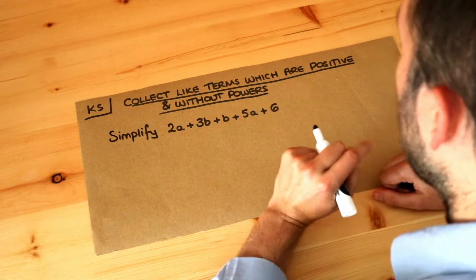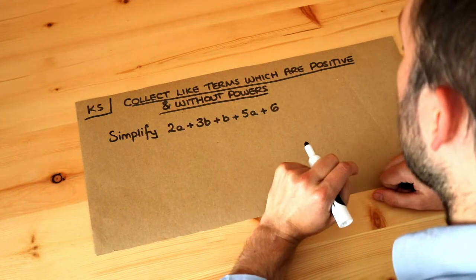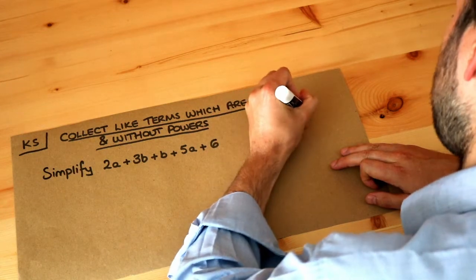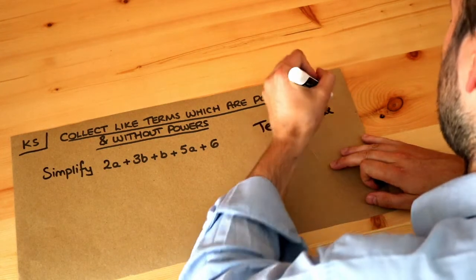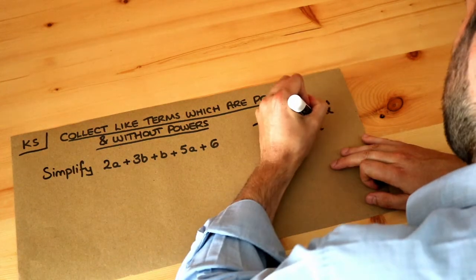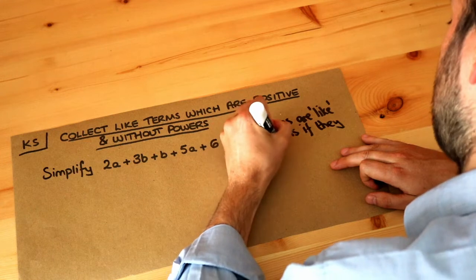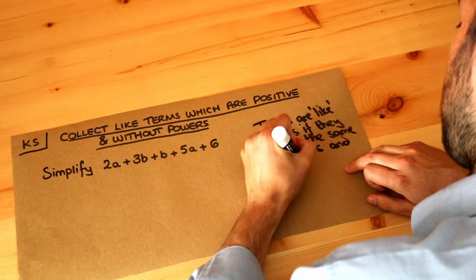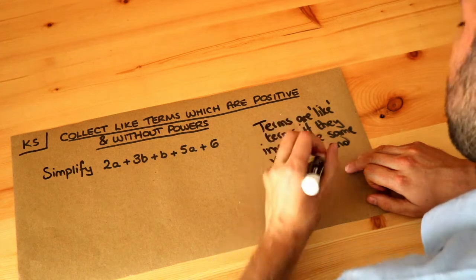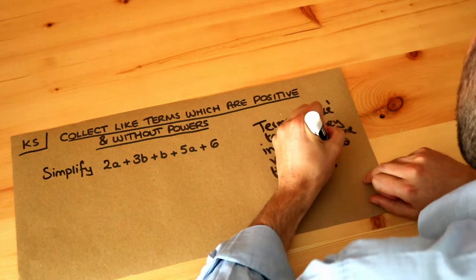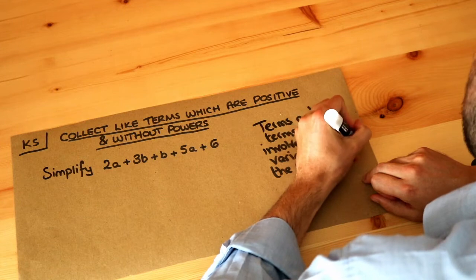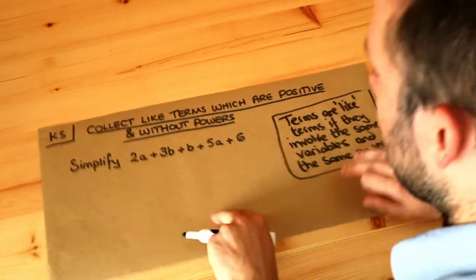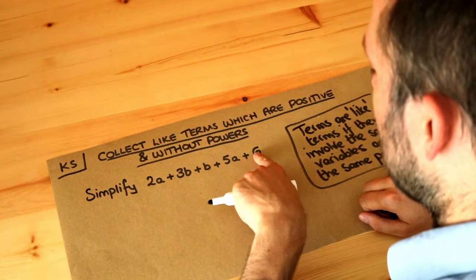Terms are like terms if they involve the same variables and the same powers. In this particular video we don't have to worry about powers because we don't have any powers like squared, cubed, etc. So let's ignore that for the moment. By a term, each of these things we're adding together are terms.